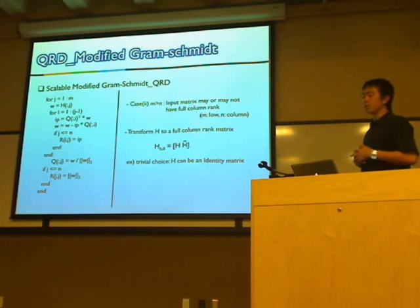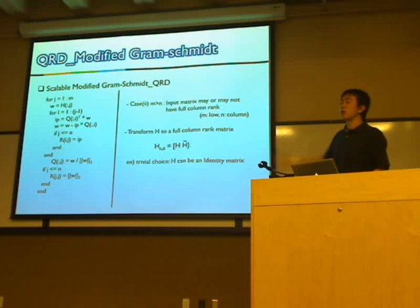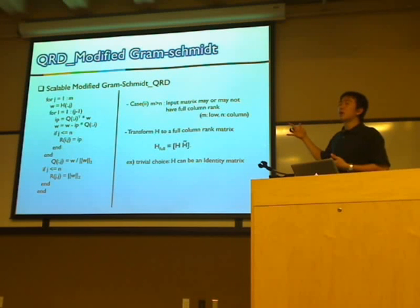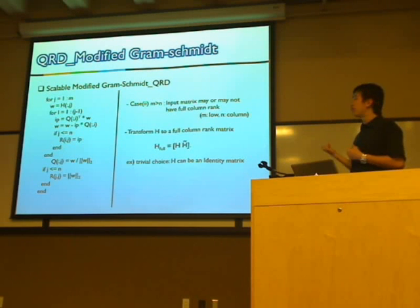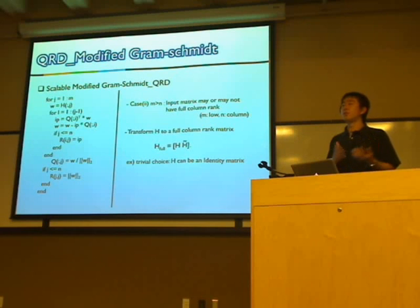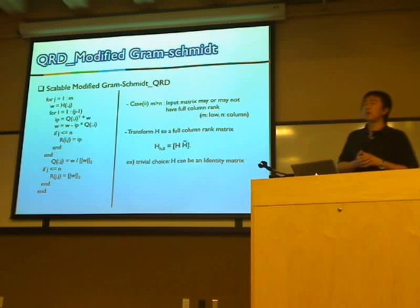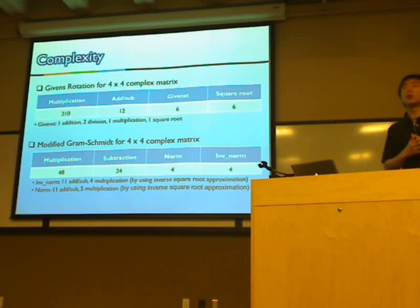The other algorithm is modified Gram-Schmidt. Both algorithms are scalable, but Gram-Schmidt is simpler and has better scalability than the Givens Rotation algorithm. However, there is a constraint: the input matrix must have full rank. If the input matrix does not have full rank, we need to transform the input matrix using an augmented H-tilde, which can typically be set to the identity matrix as a trivial choice. My partner will now continue the presentation.